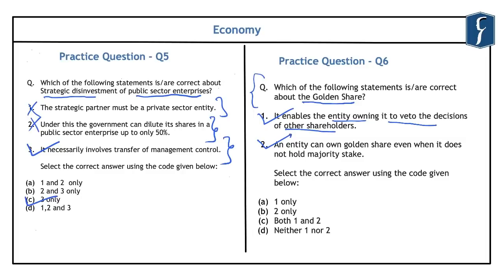The concept of golden share was first introduced in the United Kingdom in the 1980s, so that the UK government retained a say in decision-making of newly privatized public sector enterprises. Hence the correct answer is that both 1 and 2 are correct. Both strategic disinvestment of PSEs and the concept of golden share are very important from the preliminary examination point of view and should be kept in mind.